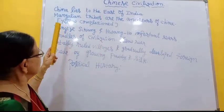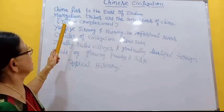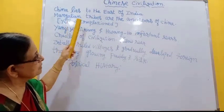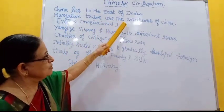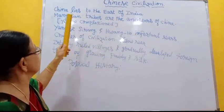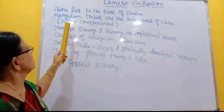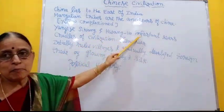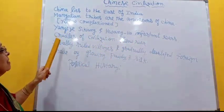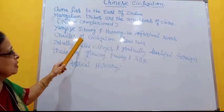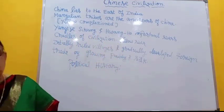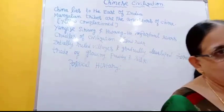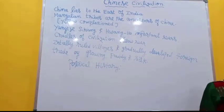Let us learn about the Chinese civilization in detail. Mongolian tribes are the ancestors of China — the previous people, the ancestors of the Chinese population, are Mongolian tribes. They are of yellow complexion. Yangtze, Kiyang, and Hango are the important rivers of China. They are called the cradles of civilization. We have already learnt in previous chapters how rivers play an important part in the development of civilization.